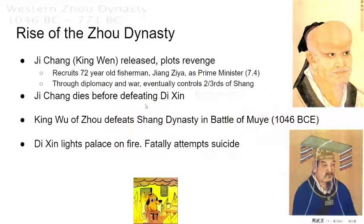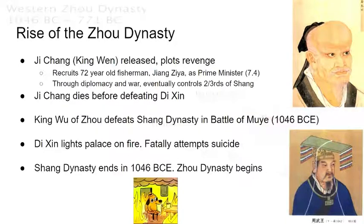Meanwhile, Di Xin lights his palace on fire. Knowing the end was near, he did not want to face punishment for his crimes against humanity. Thus, he fatally attempts suicide. The Shang dynasty ends in 1046 BCE, and that is also when the Zhou dynasty begins.